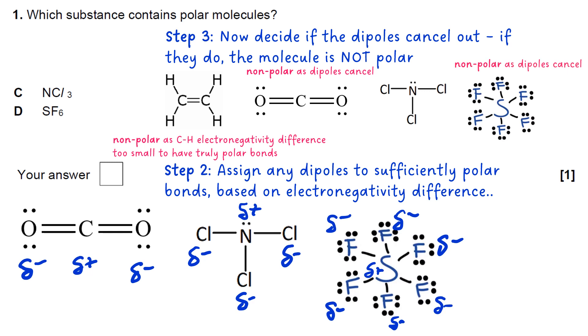With sulfur hexafluoride, you can see the dipoles cancel. If you look, they all act in opposite directions to each other. These two act in opposite directions, these two act in opposite directions, and these two act in opposite directions. So this one is also a non-polar molecule. That leaves us with NCl3 as our answer.